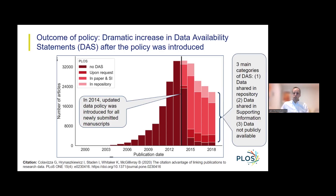As the policy was introduced for all submitted articles in 2014, by around 2016 we can see that nearly all papers included a data availability statement.